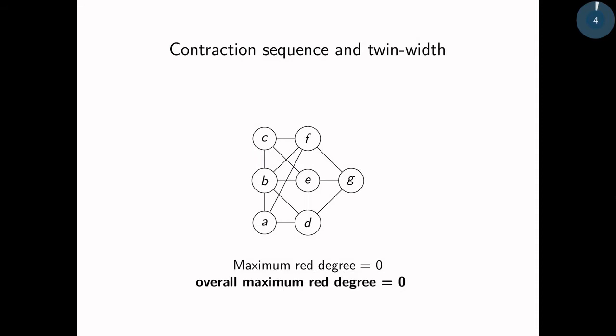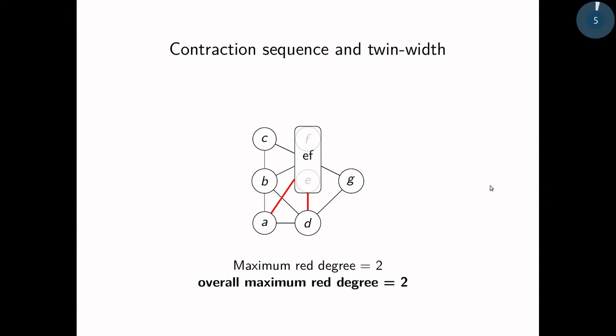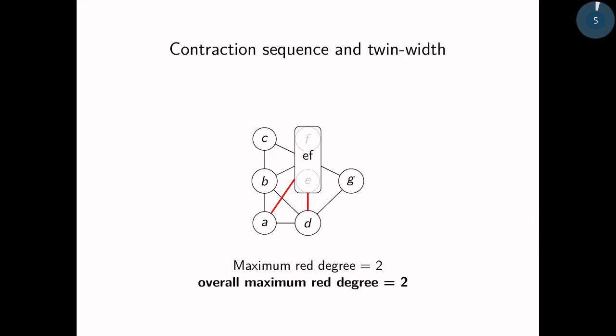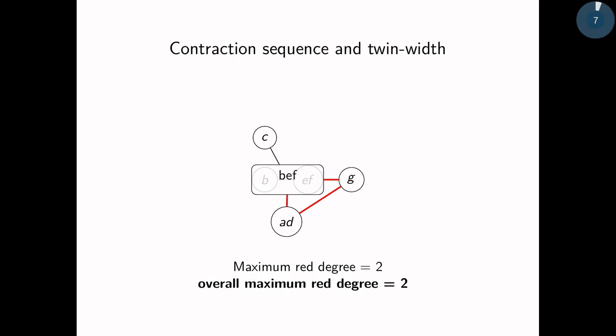Now a contraction sequence is the repeated application of this contraction operation until we reach a single vertex. What will be crucial for twin-width is the overall maximum red degree. By red degree of a vertex, I just mean its number of red incident edges. So let's see on this example. We can decide to contract e and f, and this would introduce a red edge to a and to d. Then we can contract maybe a and d and get this trigraph, and we can continue until we reach a single vertex.